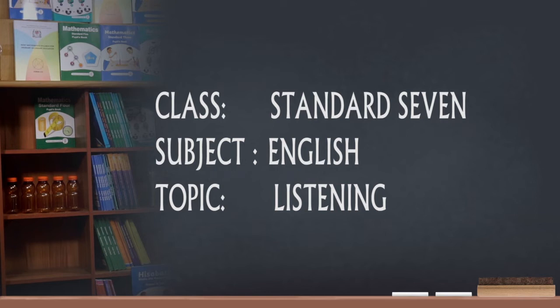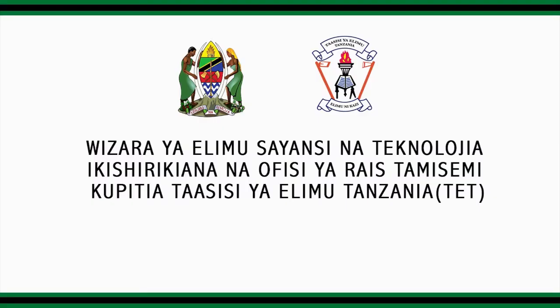After a short break, let us proceed with our lesson. Let us check the following exercise. Did you hear the following words in the story? Into, towards, across, through, and past. The words that I've mentioned show movement. The words that show movement are called prepositions of movement. Prepositions of movement are words which show movement from one direction to another. Now let's see how prepositions of movement are used in sentences.